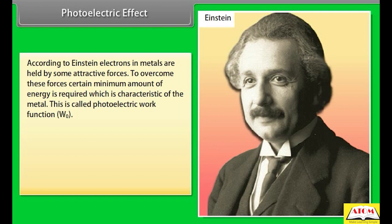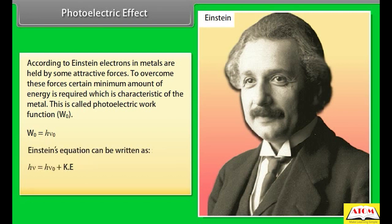According to Einstein, electrons in metals are held by attractive forces. To overcome these forces, a certain minimum amount of energy is required, characteristic of the metal — called the photoelectric work function W₀. W₀ = hν₀. Einstein's equation can be written as hν = hν₀ + KE, so KE = hν − hν₀.